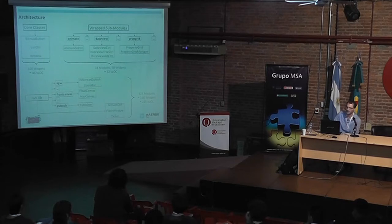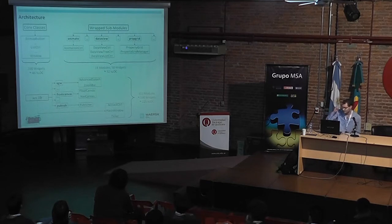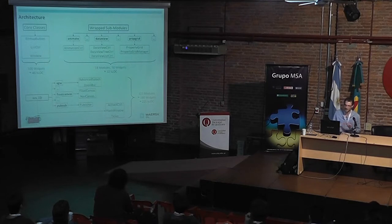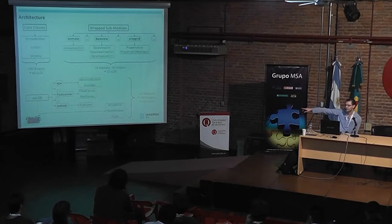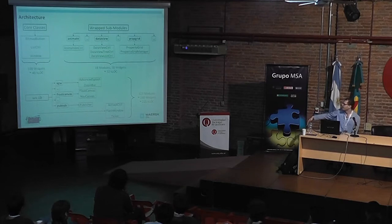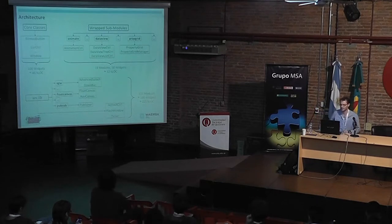The core classes — available on all platforms using native controls — number about 100 widgets and 45,000 lines of code. Then there are sub-packages still wrapped from C++ WX Widgets but mostly generic implementations: 18 modules and 50 different widgets. The biggest part in pure Python code is what we call WX Lib, the WX Python library, which contains only custom owner-drawn controls — 250,000 lines of code with a lot of controls to play with.